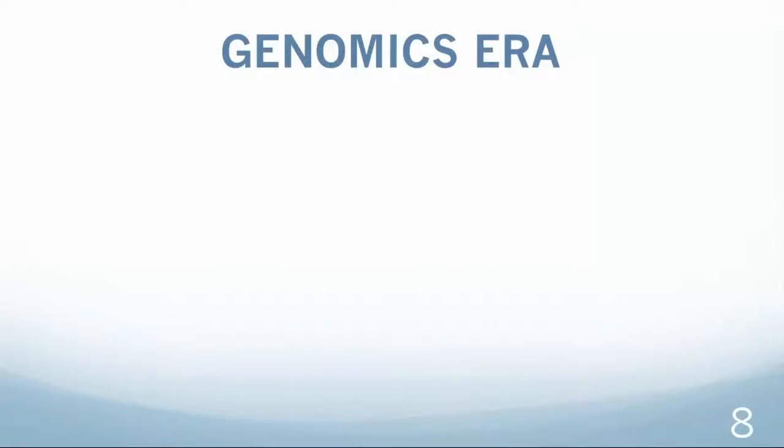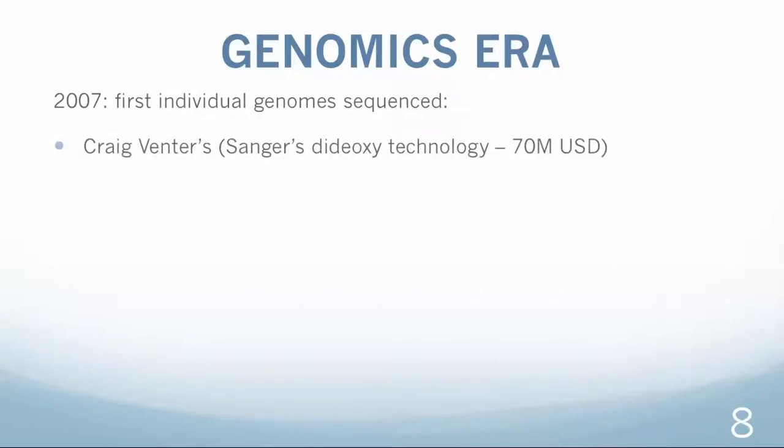After the publication of the human genome in 2003, one of the very first people to be sequenced was Craig Venter, the founder of Celera Genomics, the company that contributed tremendously in speeding up the human genome project using the shotgun sequencing technique. Venter's genome was sequenced in 2007 using the same shotgun methods and the cost for the project was estimated at about 70 million dollars.